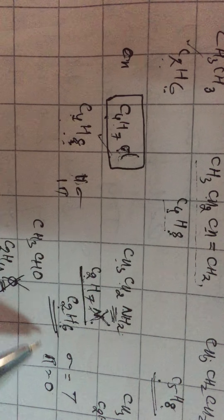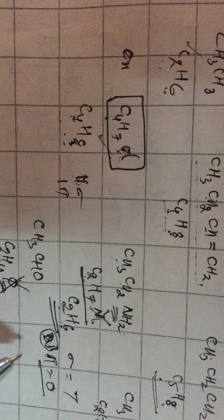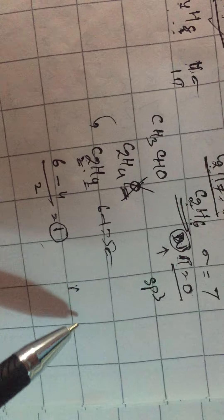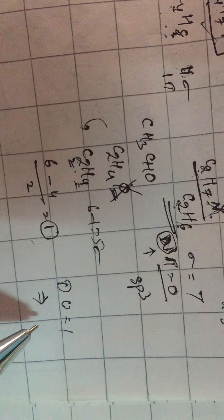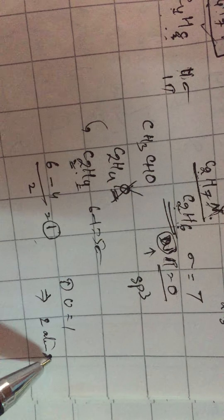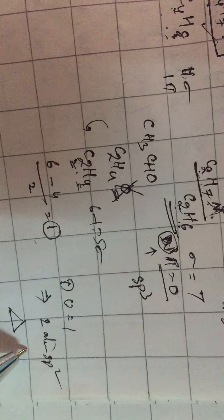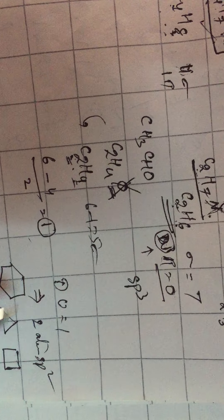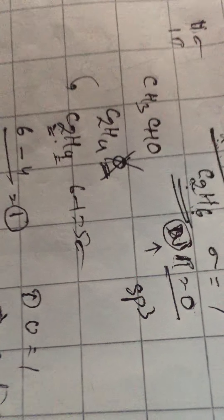If degree of unsaturation is 0, there are 0 pi bonds and all atoms are sp3 hybridized. If degree of unsaturation equals 1, the molecule has two options: if it is an open chain compound, two atoms are sp2 hybridized; or the molecule can be a cyclic compound, in which case the cyclic structure has all sp3 carbons.